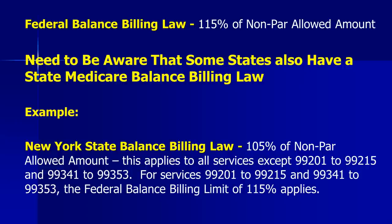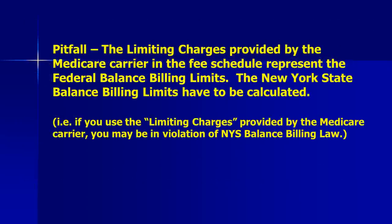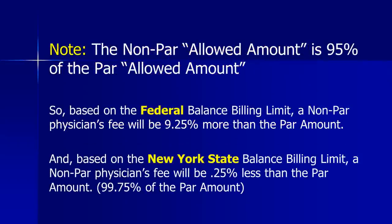There is a pitfall in states with their own Medicare balance billing laws: the Medicare carrier fee schedule shows only the federal balance billing limits. The state balance billing limits must be calculated by the physician. If you use only the limits provided by the Medicare contractor, you may be in violation of state balance billing laws. Note that the non-par allowed amount is 95% of the par allowed amount, so a non-par physician's fee under the federal limit will be 9.25% more than the par amount, but under New York State's limit, only 0.25% less than the par amount.